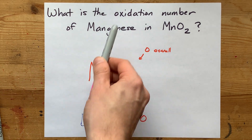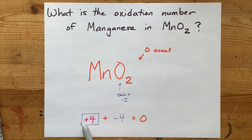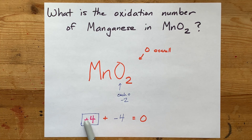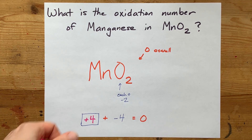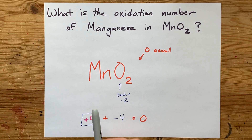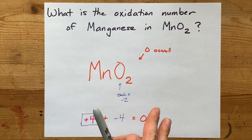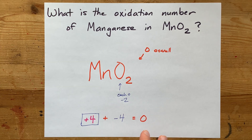For oxidation numbers, it is important that you put a sign in front — you can't have just a regular four. It's supposed to be written as plus four, very specifically.